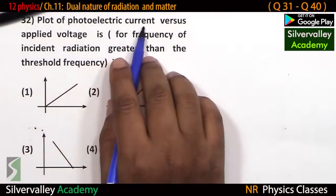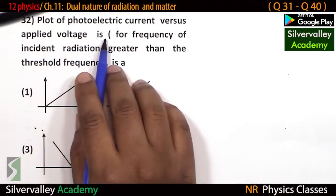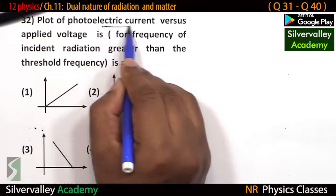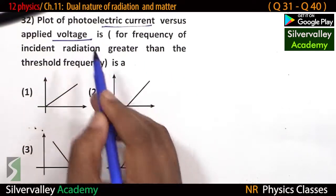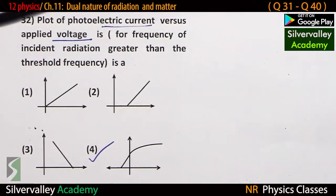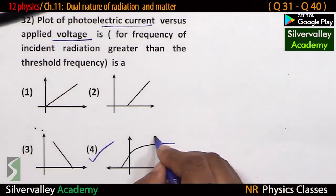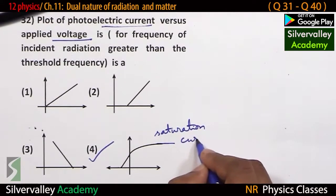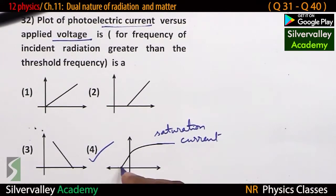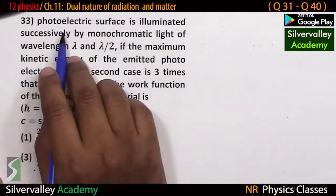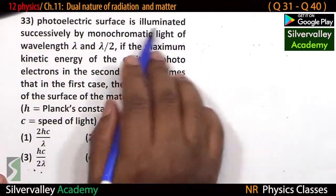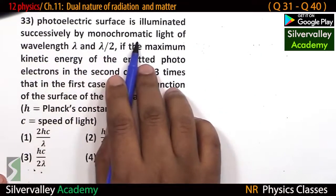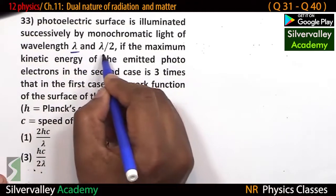The plot of photoelectric current versus applied voltage is a standard graph. The saturation current region is represented in one part, and the x-intercept gives the stopping potential.